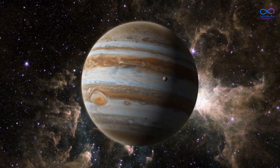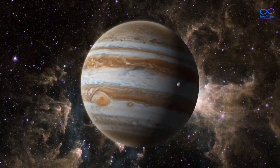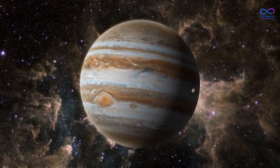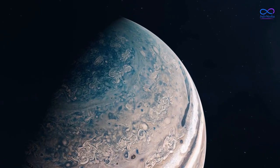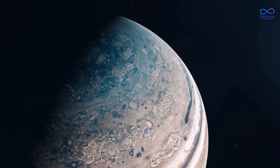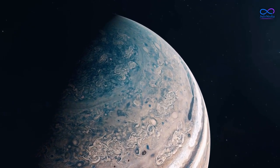HD 189733 b has a mass of about 1.2 times that of Jupiter and a radius of about 1.2 times that of Jupiter as well. This makes it a bloated planet, meaning that it is less dense than Jupiter and has a more extended atmosphere.